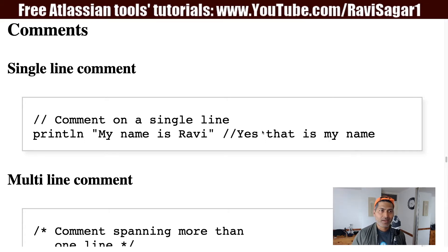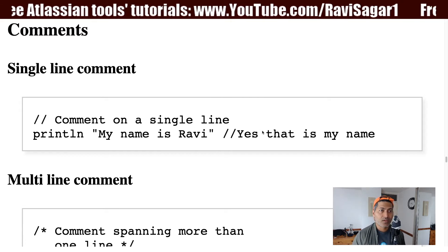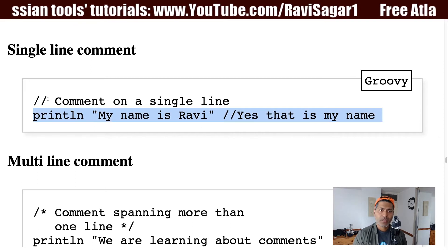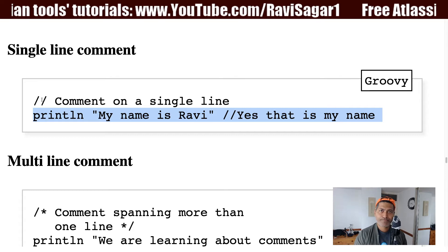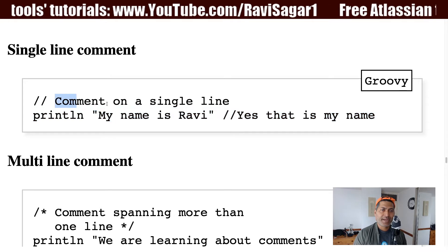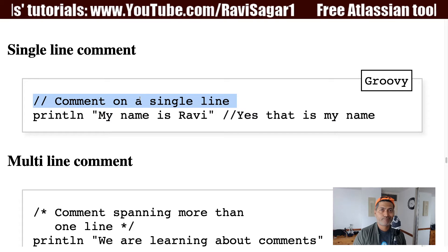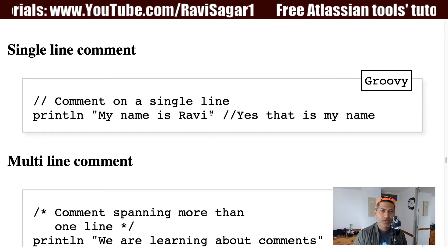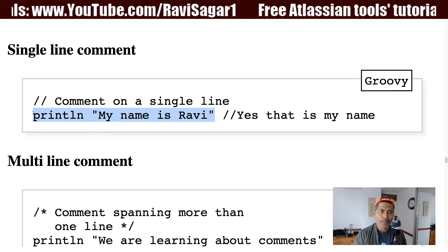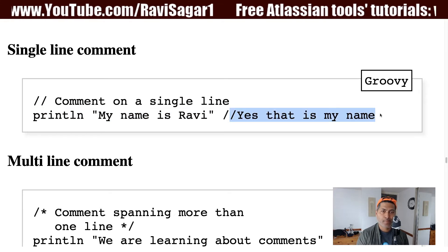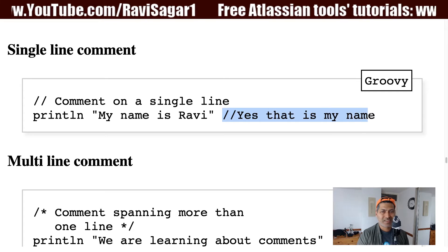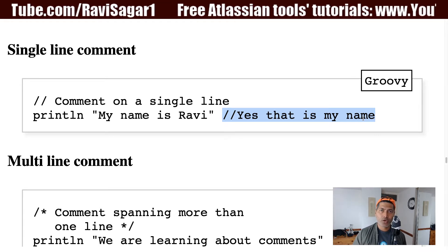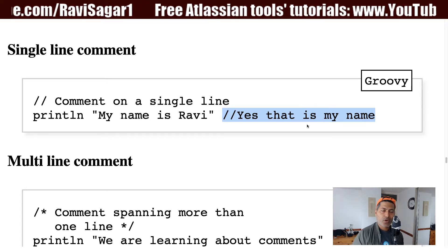In Groovy it is important to know the different types of comments you can create. The first and most popular type is the single-line comment. Anywhere in your code, if you use a double forward slash and write any text, that line will be ignored by the compiler. You can also place it on the same line as a statement — the code before it will be executed, but everything after the double forward slash will be ignored.